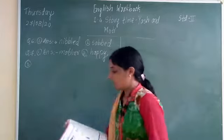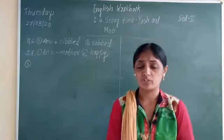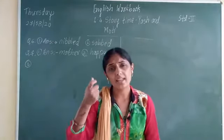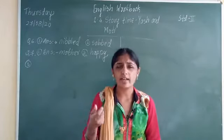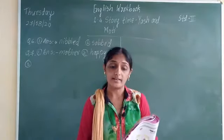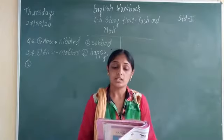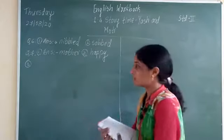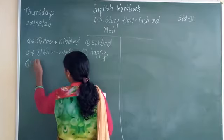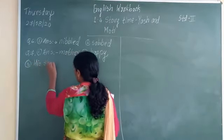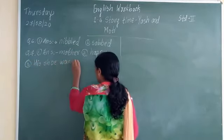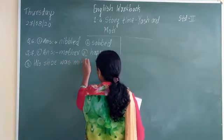Third question: why was Yes sobbing? Sobbing means crying noisily or crying loudly. The reason behind that is his shoe was missing. So the third answer is: his shoe was missing.